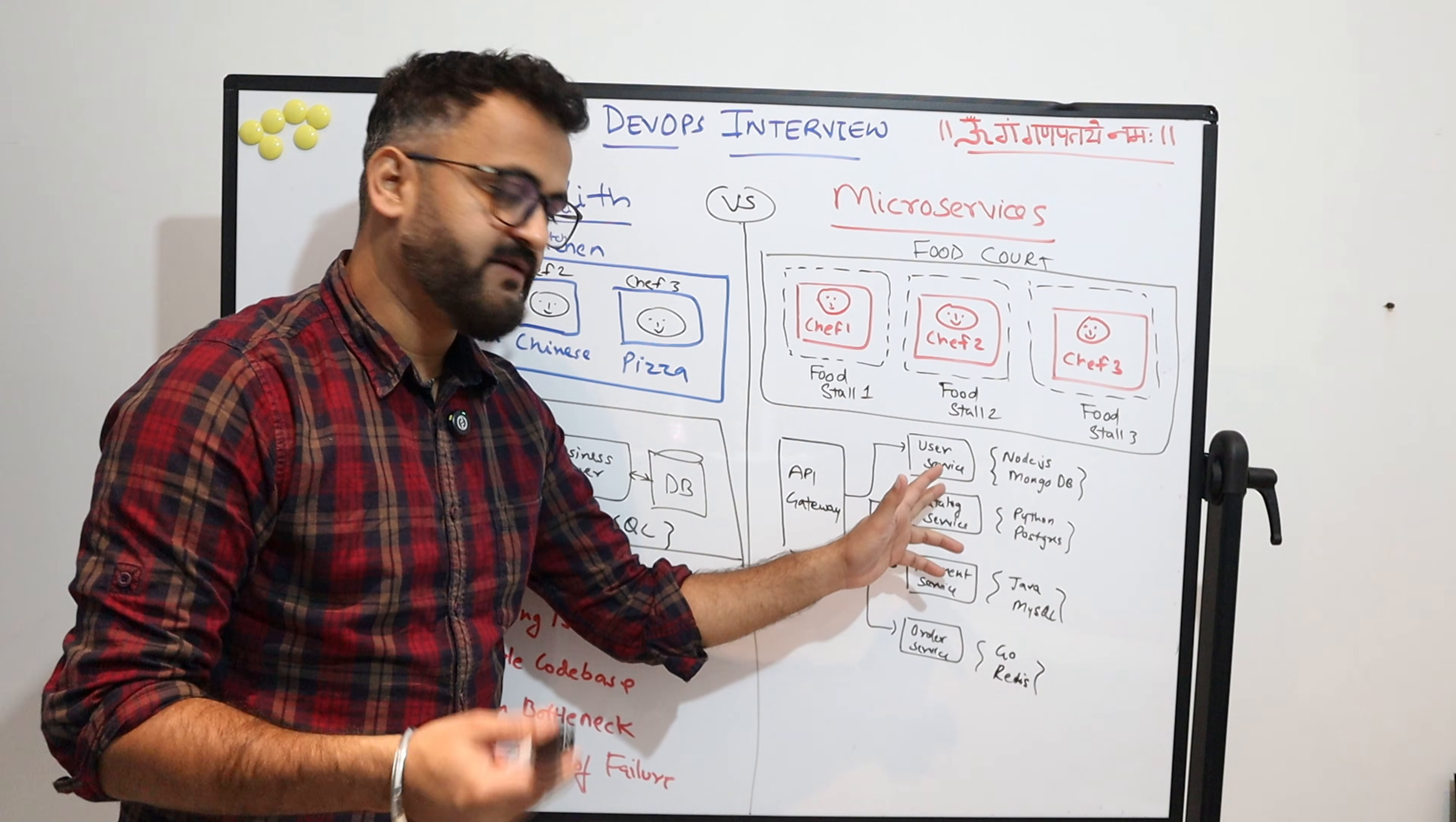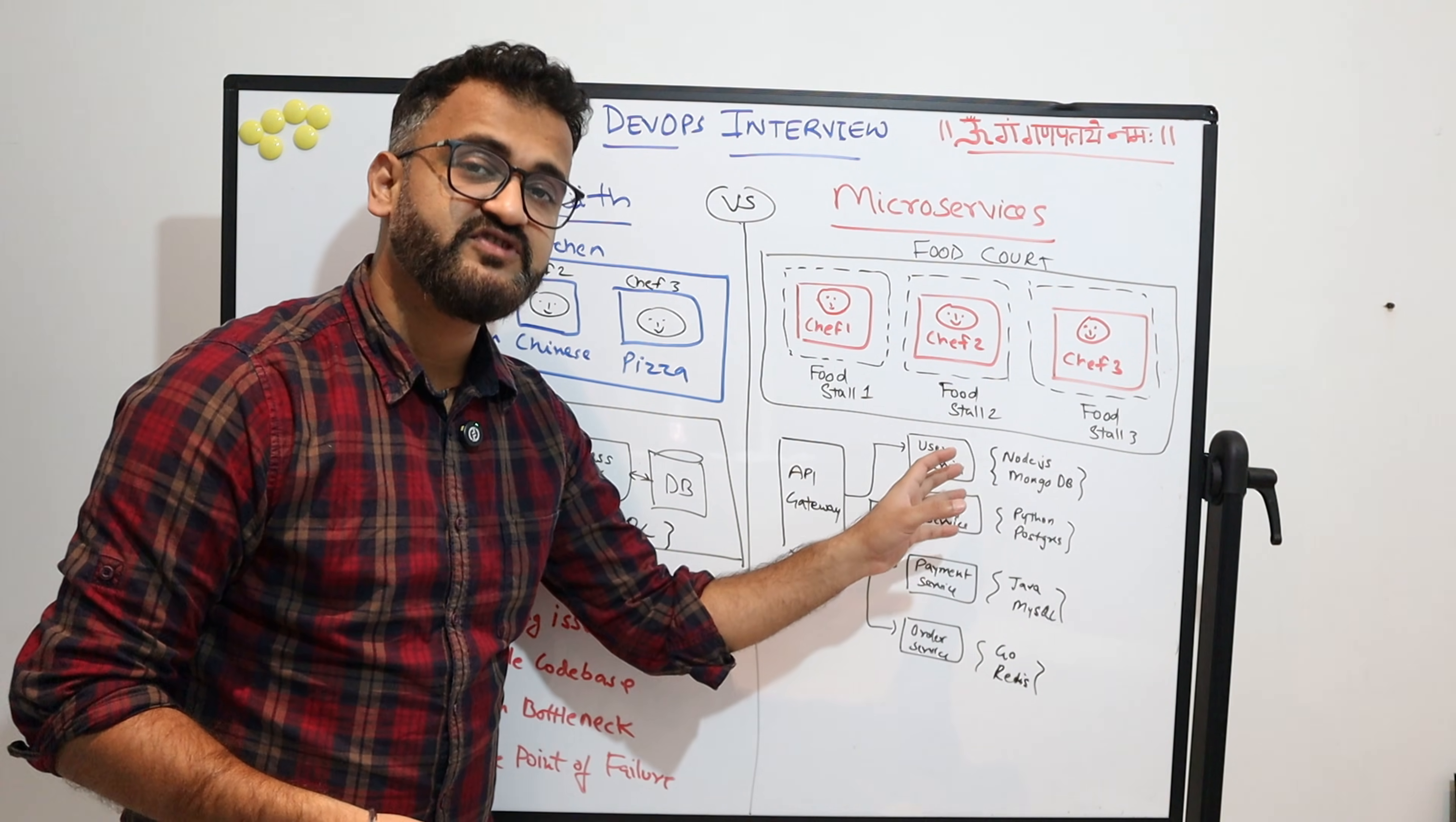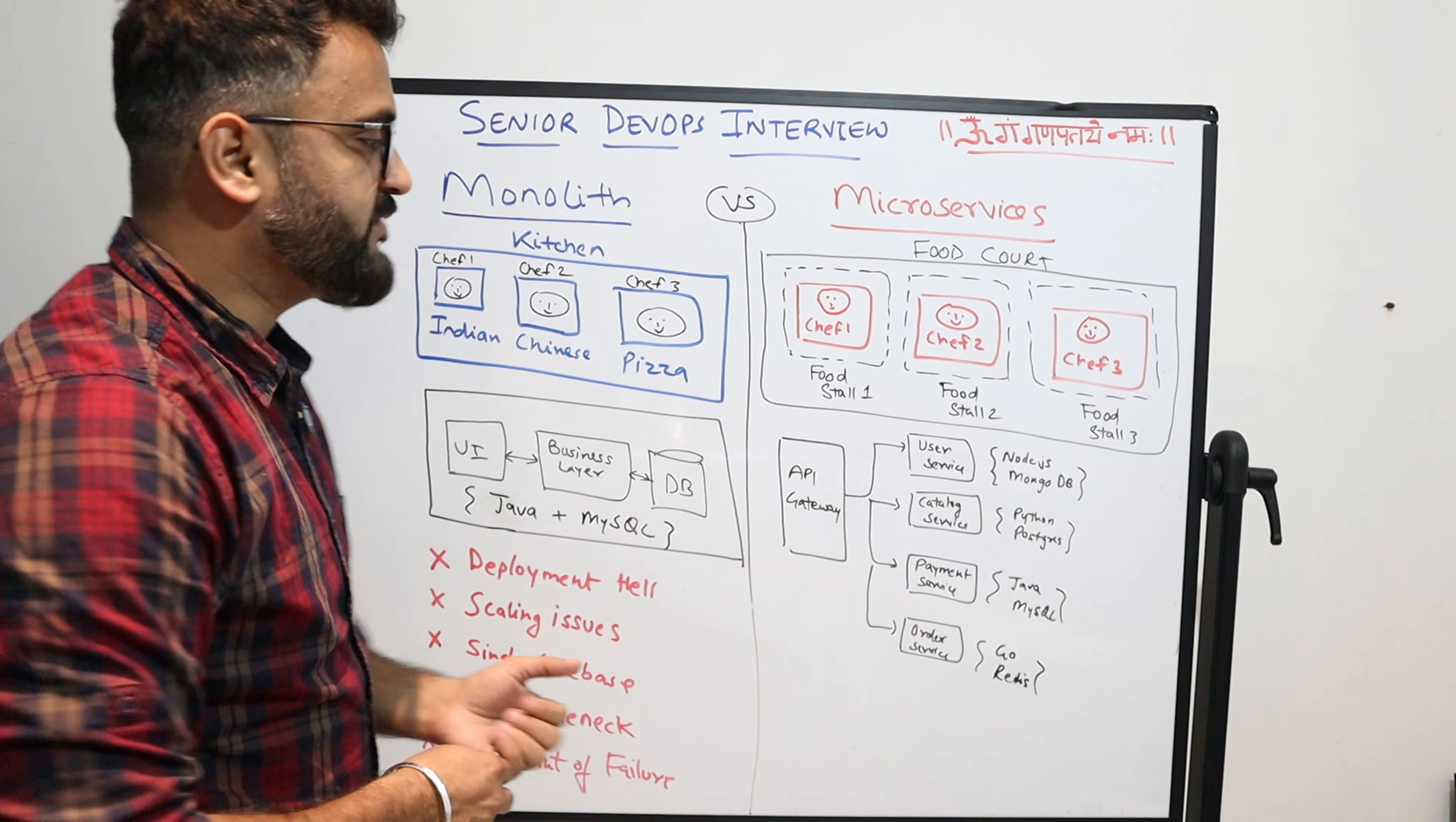If there is a request coming only to see a user profile or validate a user profile, the request will only go to user service. The rest of the services are independent. It is not getting impacted by the load which is coming in. API gateway is your single point of entry.